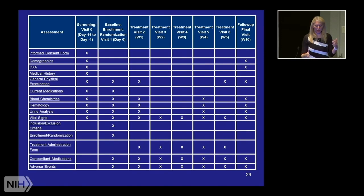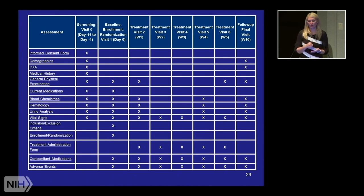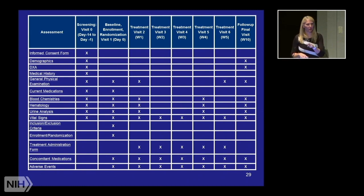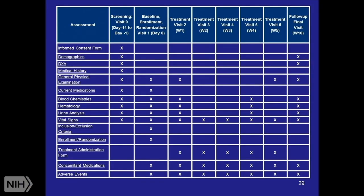If at treatment visit five you were supposed to collect blood but thought it was visit four, you miss that midpoint data for that participant. When you forget something once, you tend to forget it for subsequent patients too. A clear checklist — this patient is at treatment visit four, here's what to collect — prevents that. Those procedural details are in the protocol, but how you implement them is what goes in the Manual of Operations and Procedures, which is the key distinction between the protocol and the MOP.